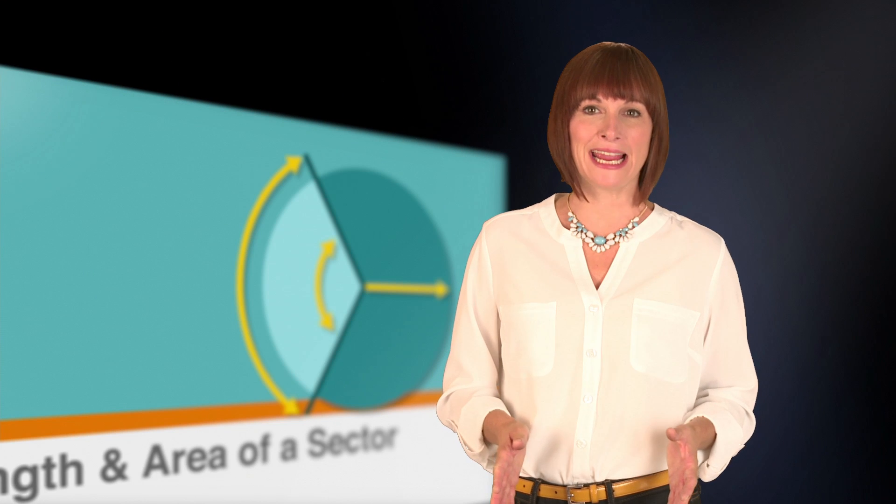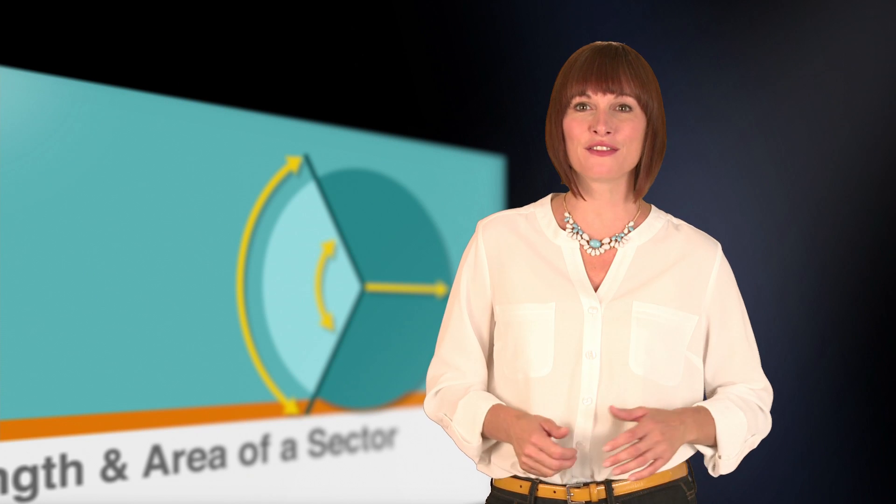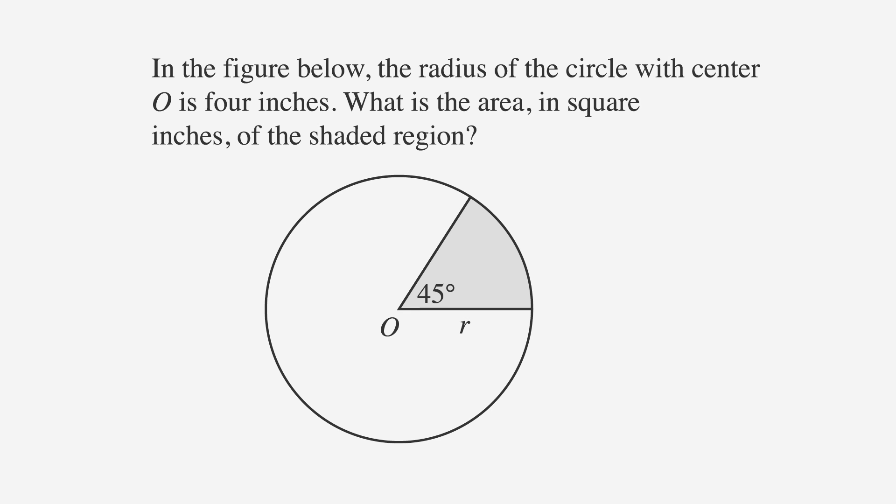Now let's solve an ACT problem that asks us to find the area of a sector. In the figure below, the radius of the circle with center O is 4 inches. What is the area in square inches of the shaded region? A is π over 2, B is π, C is 2π, D is 4π, and E is 8π.